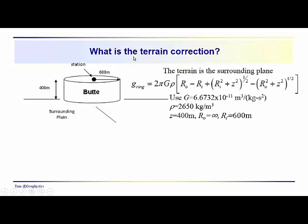Okay, over here we're going to ask, we've done our plate correction. Obviously the butte doesn't extend out to infinity. So the terrain correction is to remove the portions of the infinite plate that aren't represented at this station location. And so this terrain is the surrounding plane. It extends from 600 meters out to infinity. So our inner radius, 600 meters, our outer radius is infinite. And we substitute into this expression. Again, being units consistent.